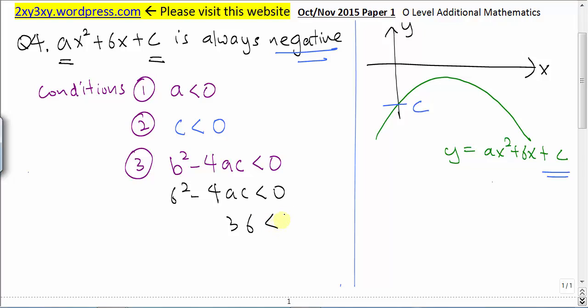So 36 is less than 4ac, so ac must be greater than 9.